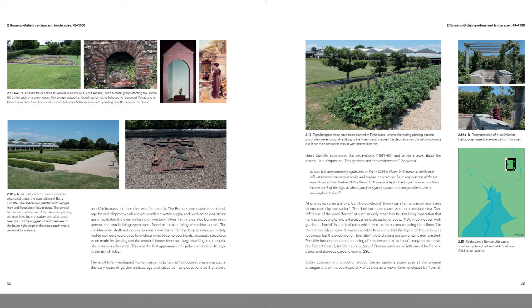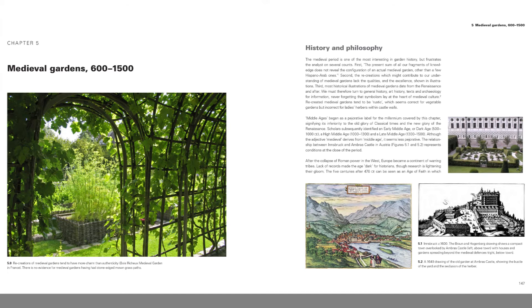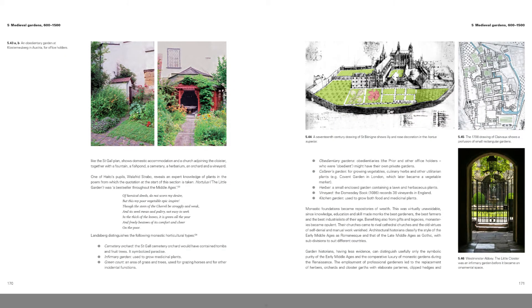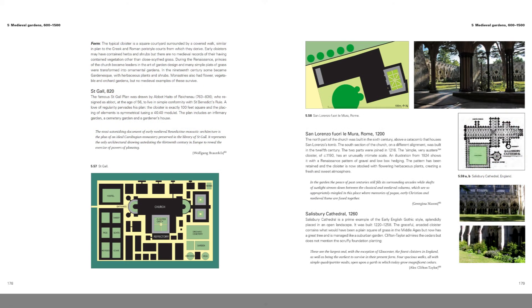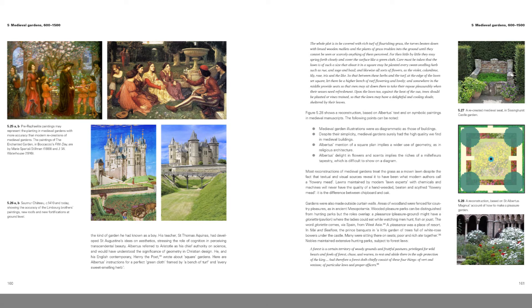Rome's colonial governors built comparable but smaller villa gardens throughout the empire. Fishbourne, on the south coast of England, was one of the largest, and there was a small governor's palace in London, now buried beneath Cannon Street Station. In the long dark age after the fall of the Roman Empire, Europe's countryside became dangerous. So medieval gardens were either built within city walls and castle walls, or they were attached to monasteries, which had the safety of sanctuaries. Most of the garden space was used to grow fruit, vegetables, and beans. But the rich also made small garden rooms for women and children, minstrels and lovers.